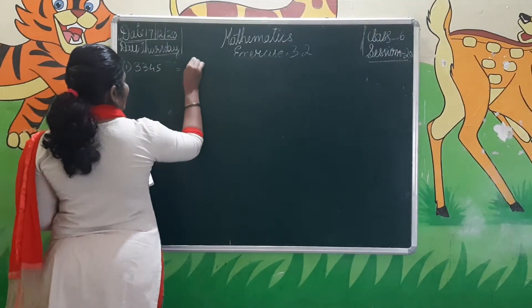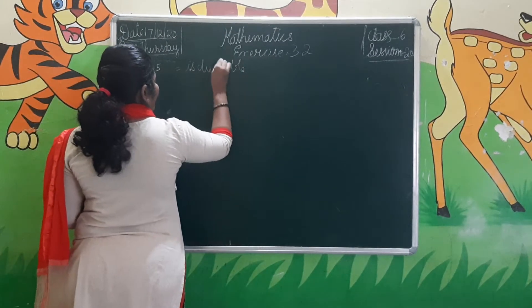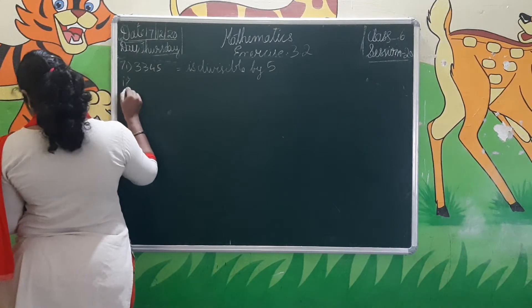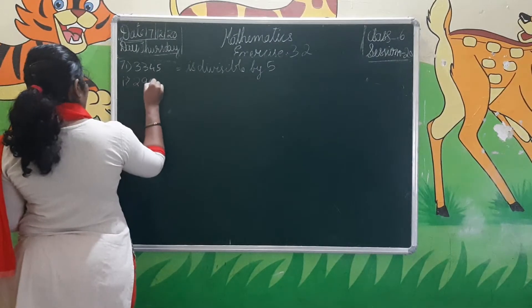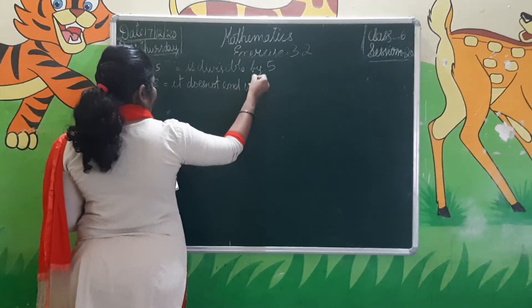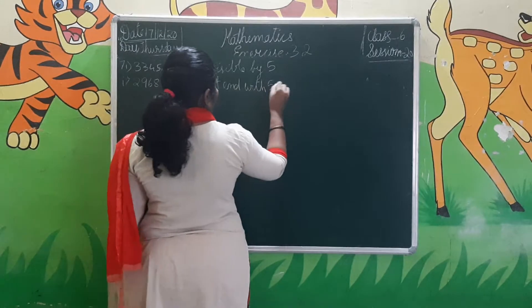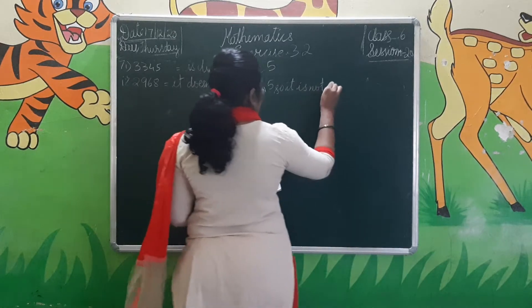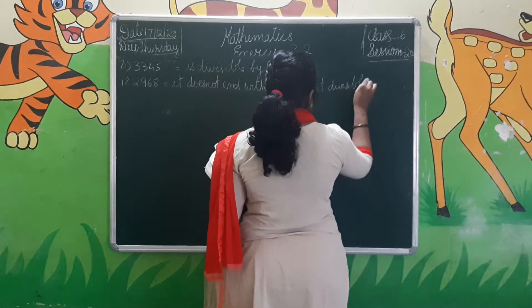First number is 345. It ends with 5, so it is divisible by 5. Second number is 2,968. It does not end with 5 or 0, so it is not divisible by 5.